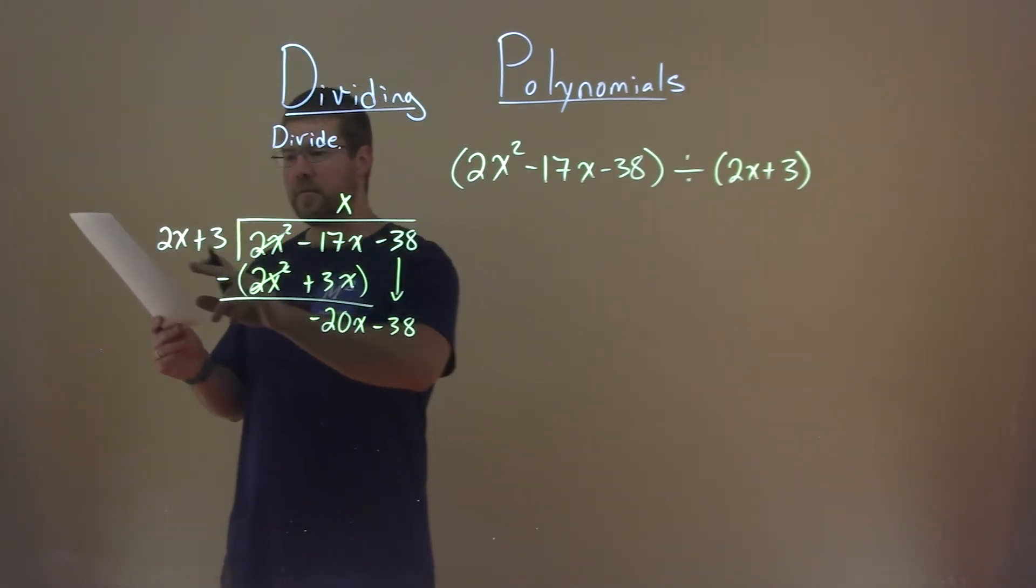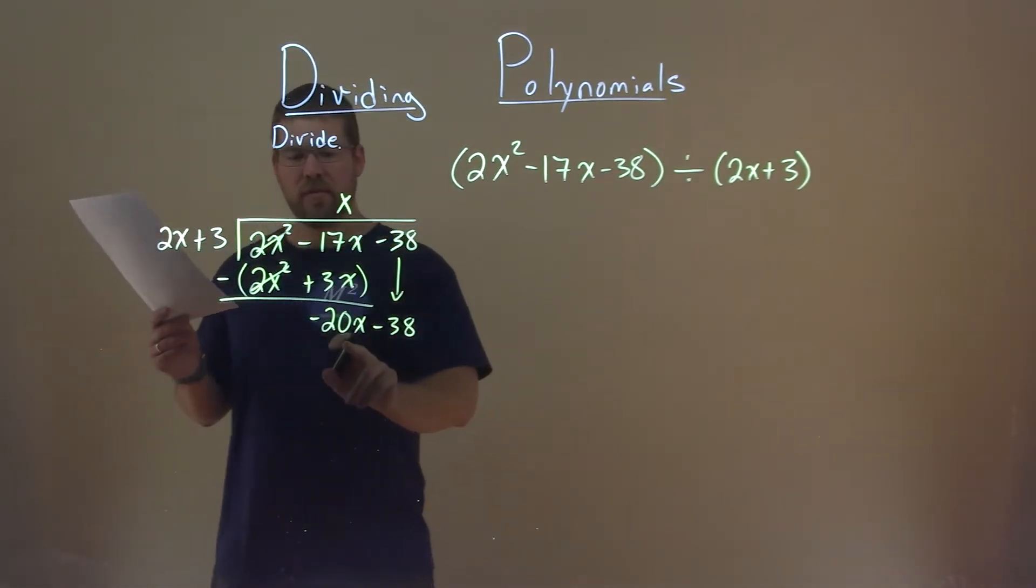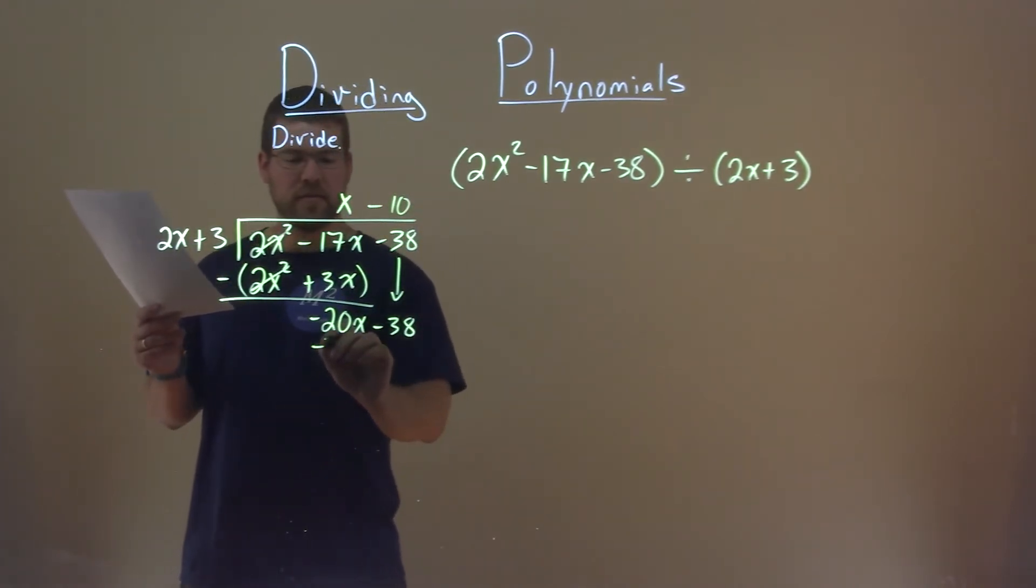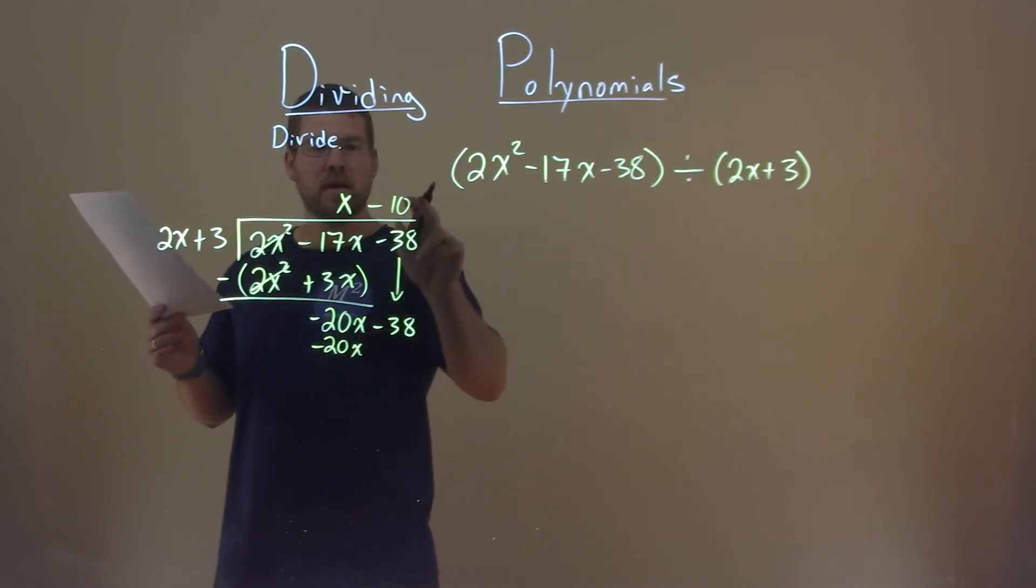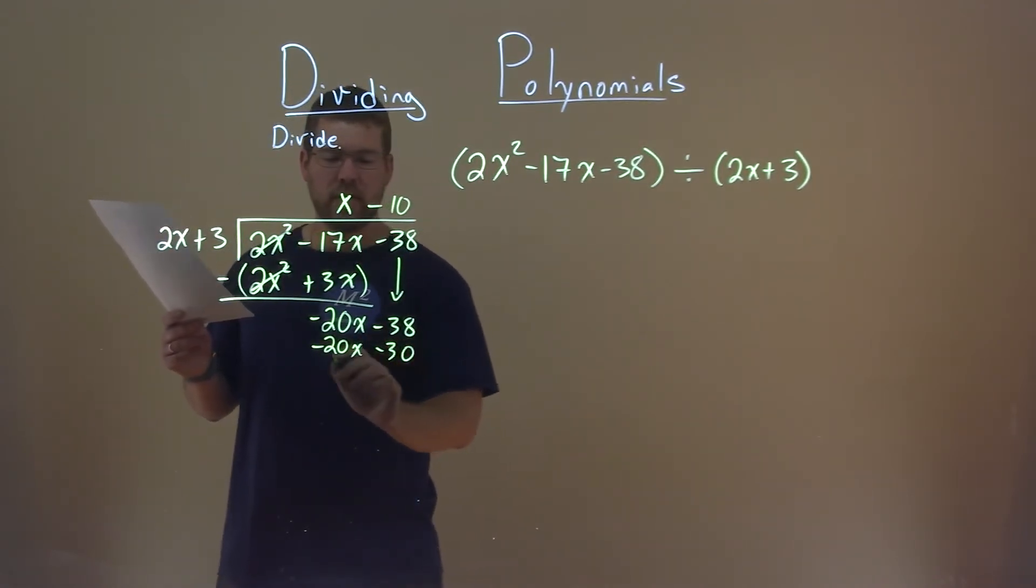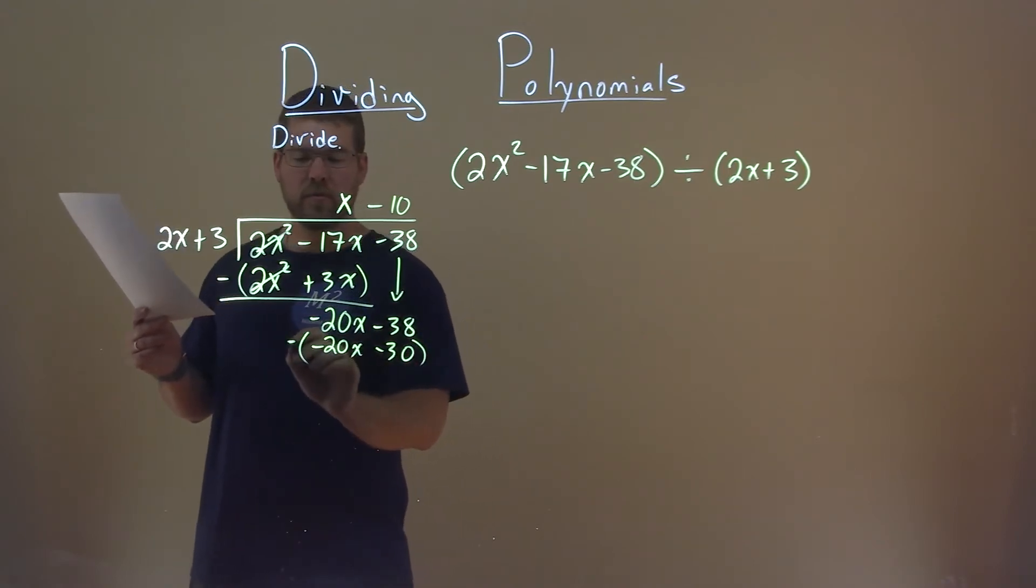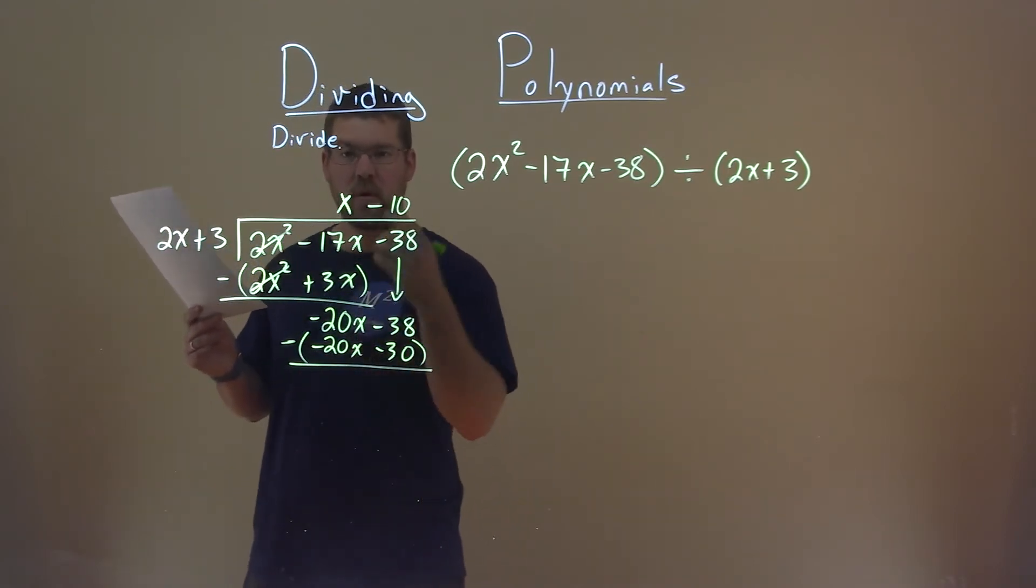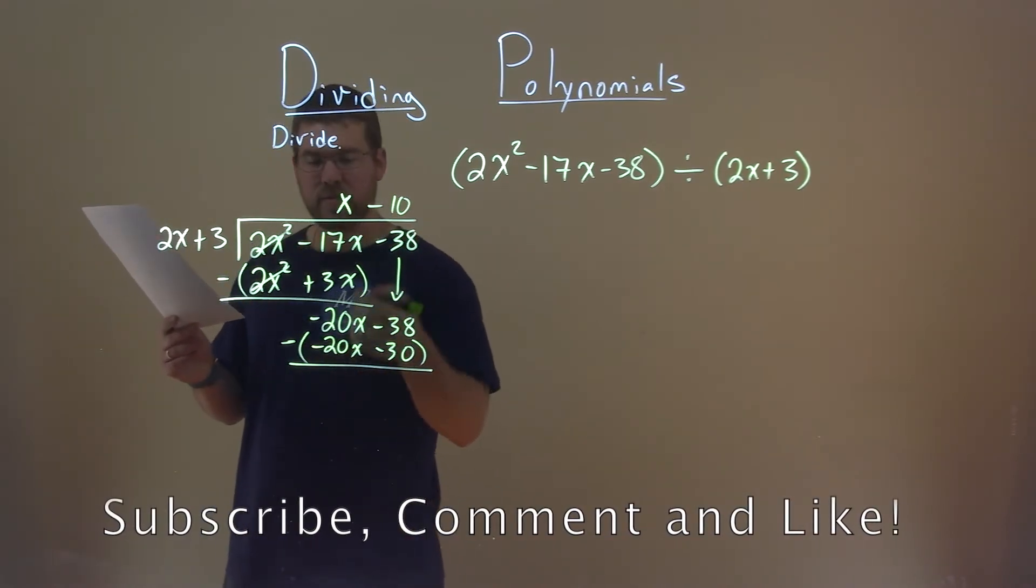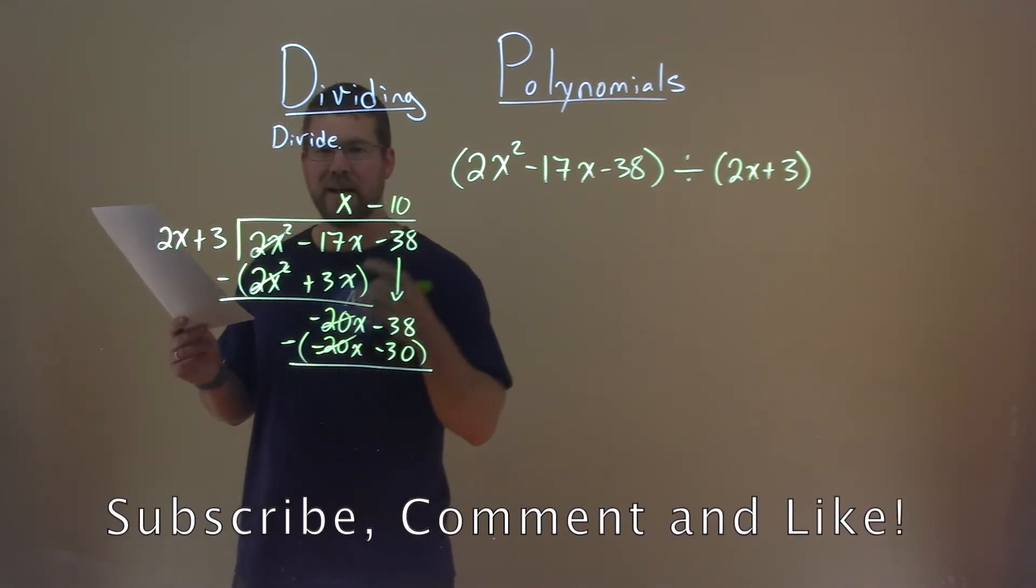What times 2x gets me a negative 20x, and that's negative 10. Negative 10 times 2x is negative 20x. Negative 10 times 3 is negative 30. And be careful now with your negatives. We're subtracting all of that from what's up top. Negative 20x minus a negative 20x is plus a positive 20x. They cancel, and that was the point.